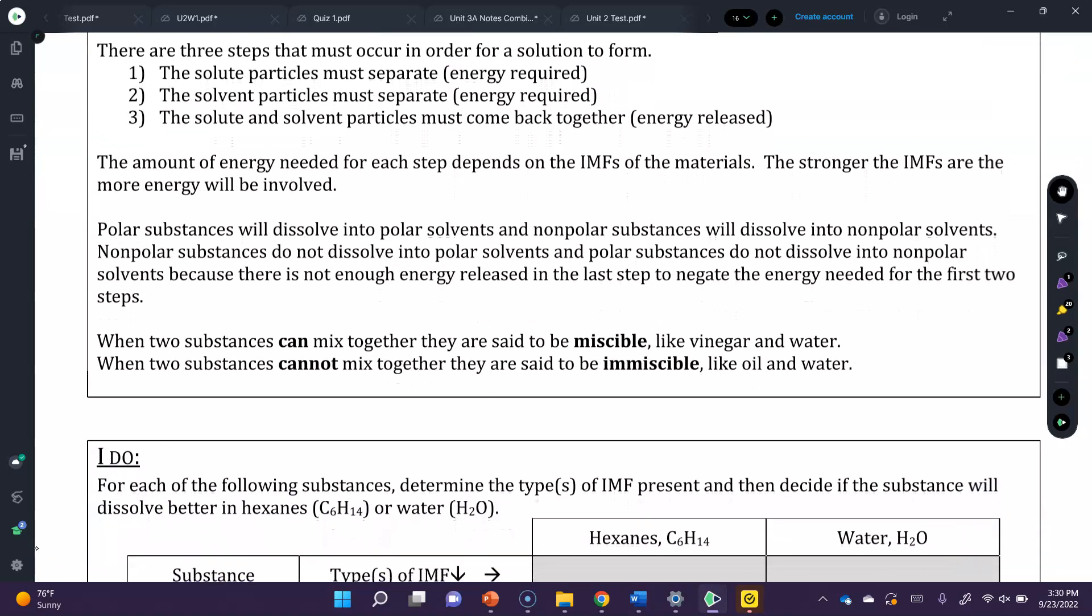There are three steps that must occur in order for a solution to form. The solute particles must separate, which requires energy to pull something apart. The solvent particles must separate, which requires energy. Then the solute and solvent particles must come back together, which releases energy when reforming bonds. Energy is not stored in bonds or attractions or any sort of thing like that.